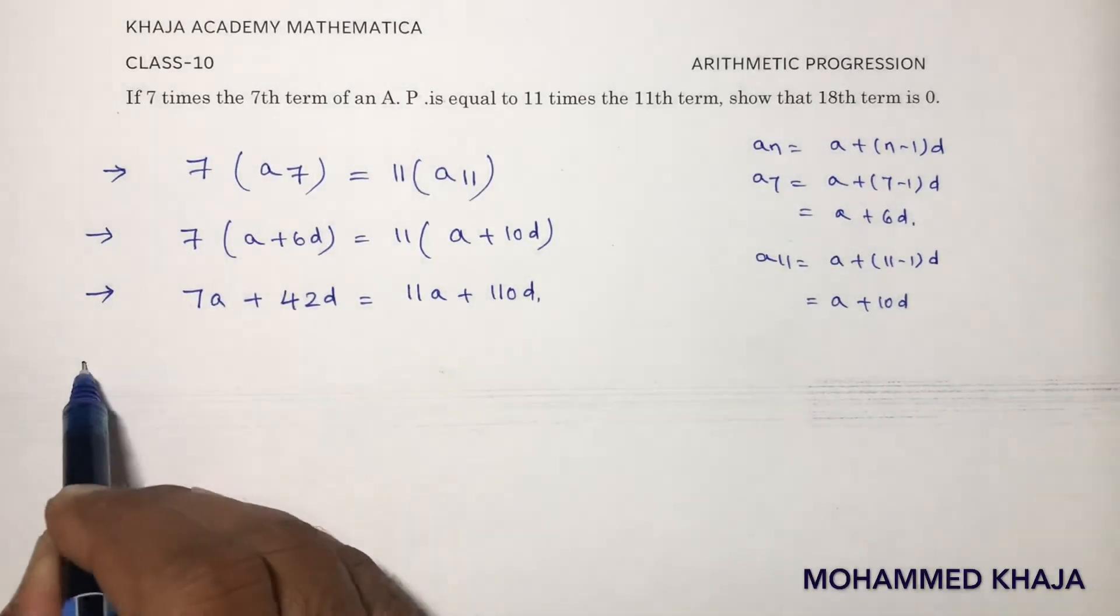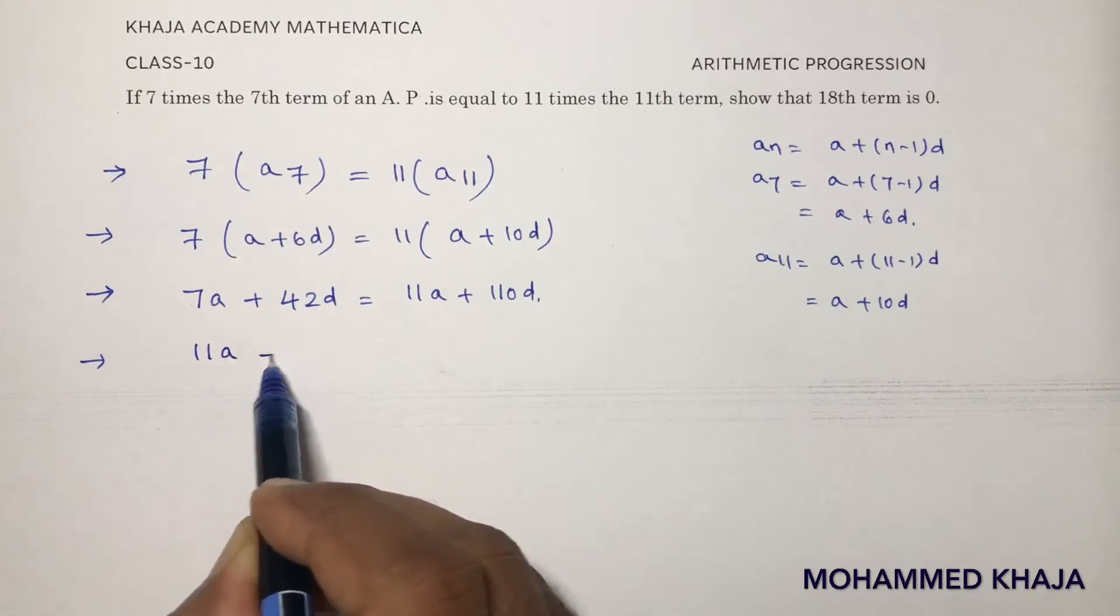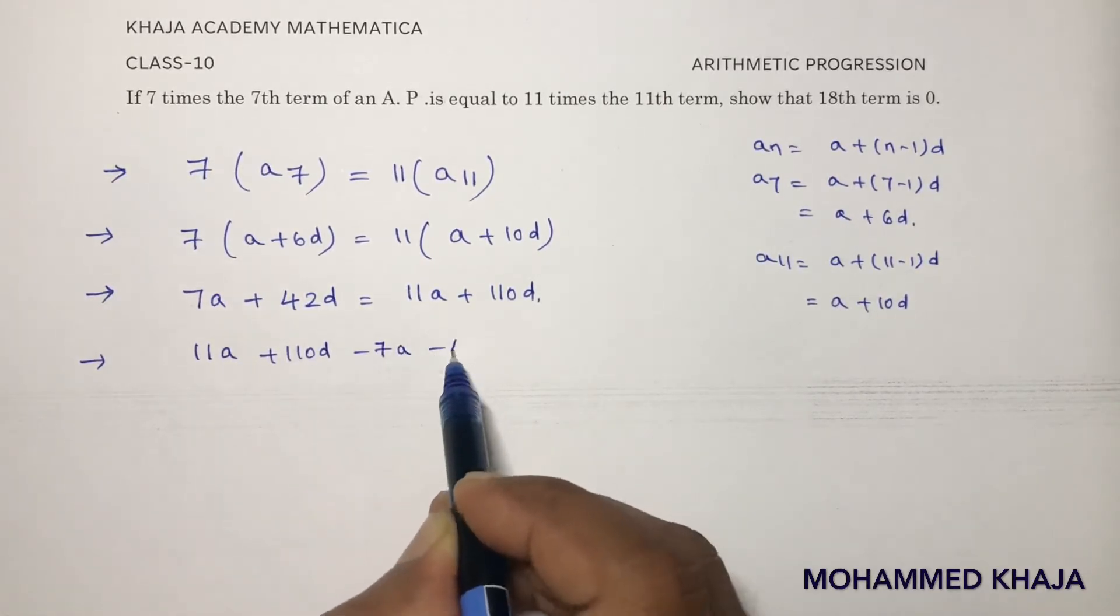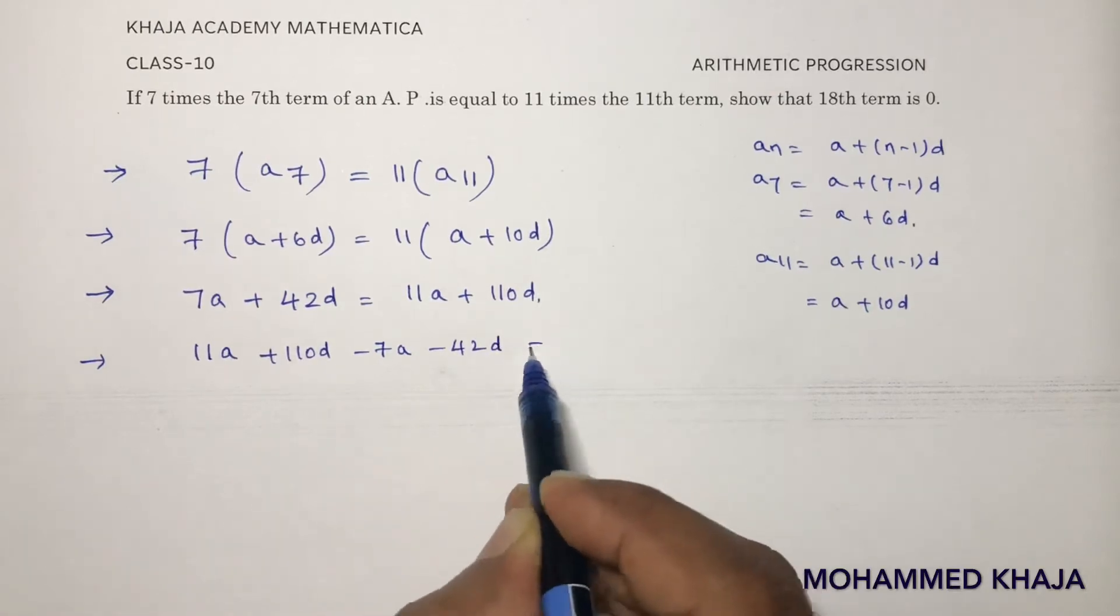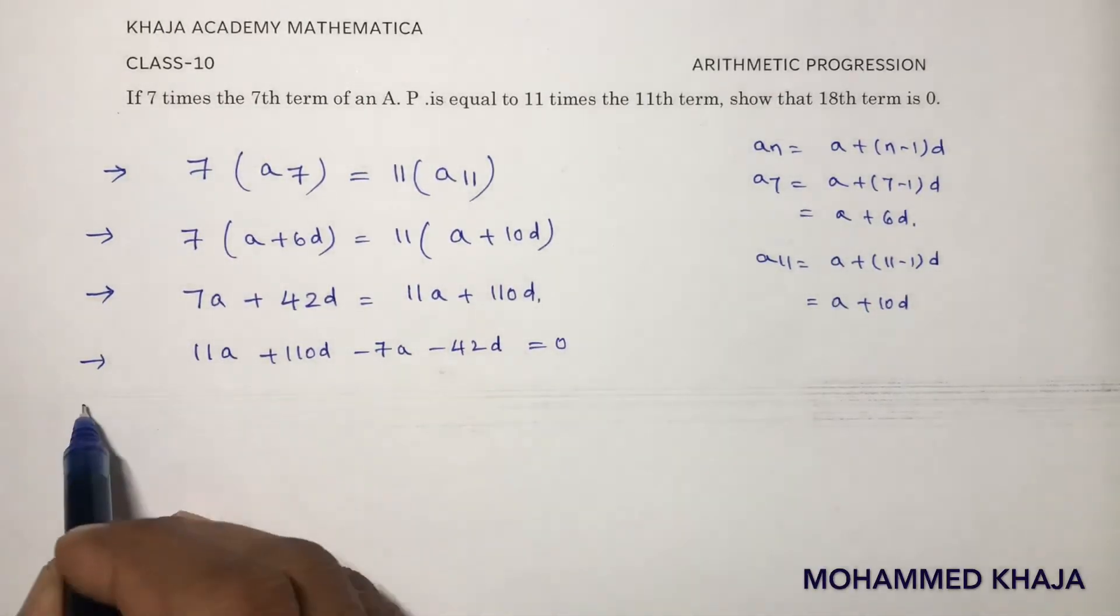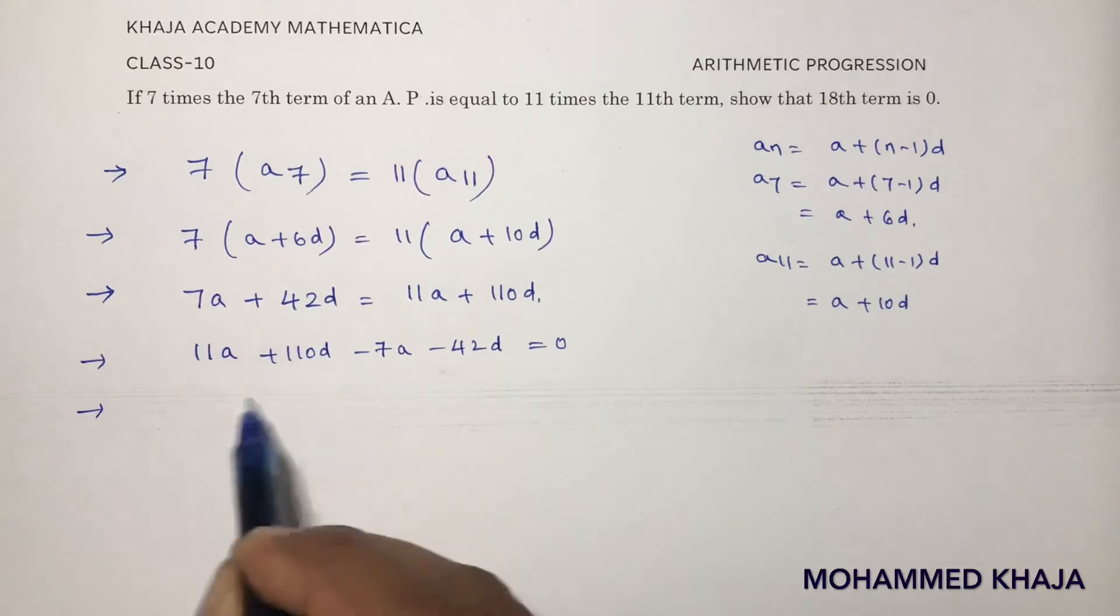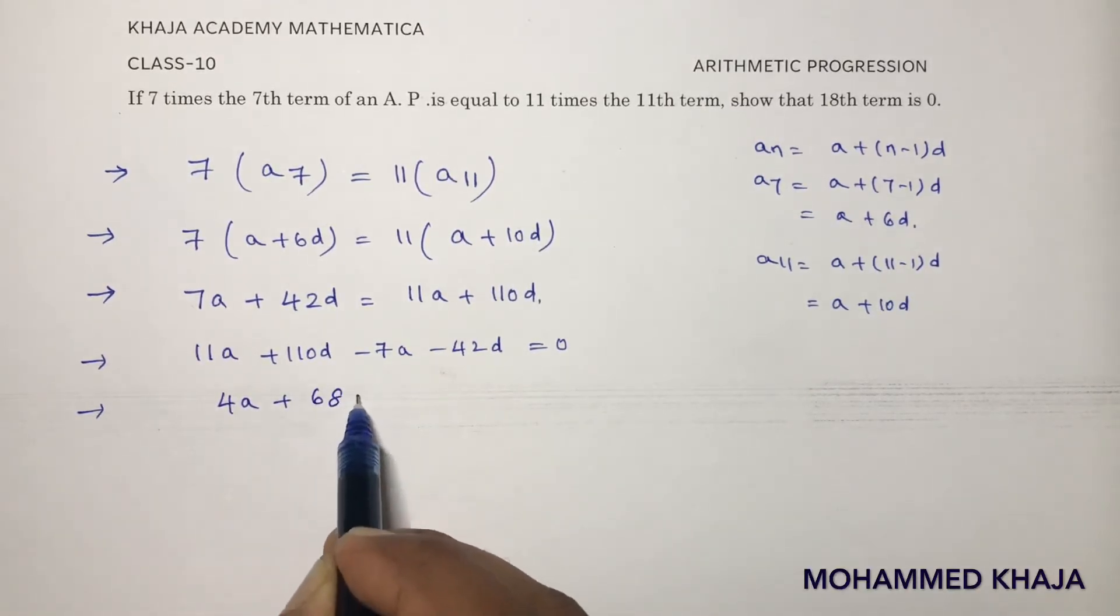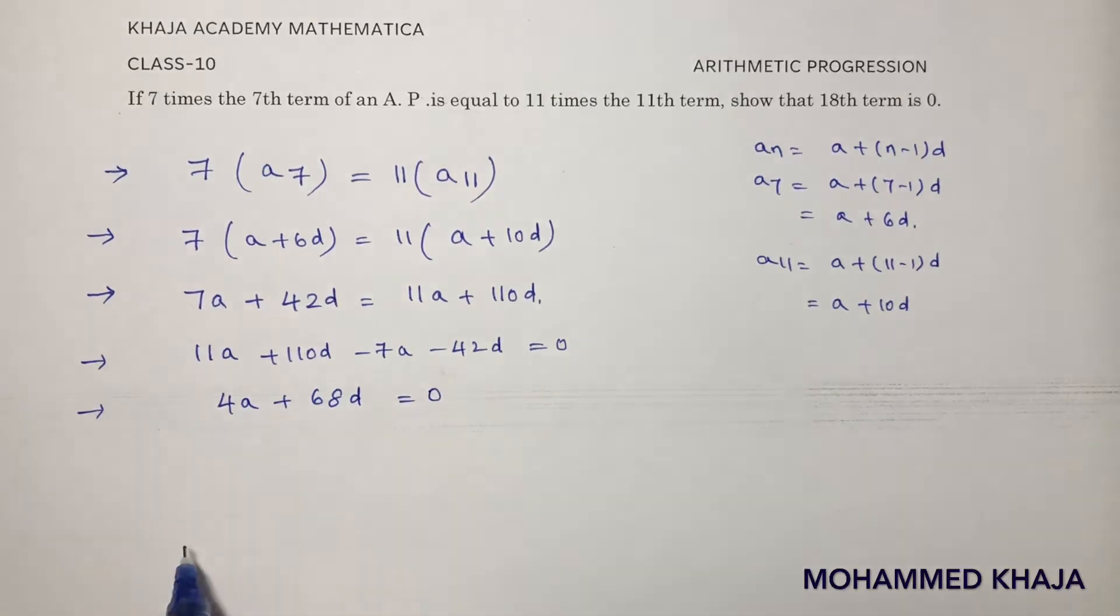Now here, first if I will write this, 11a plus 110d minus 7a minus 42d equals 0. Now here, 11 minus 7 is 4a, 110 minus 42d equals 0.